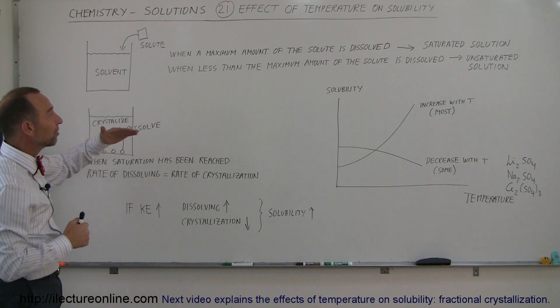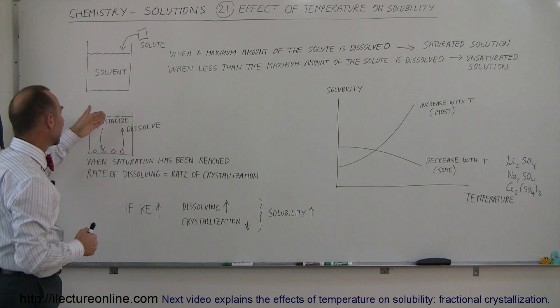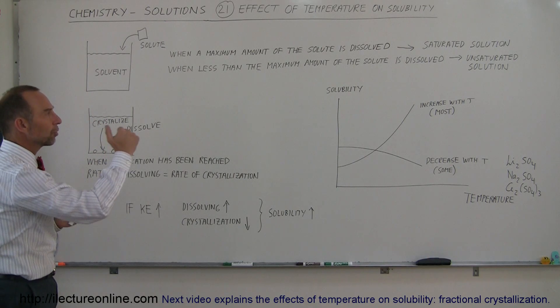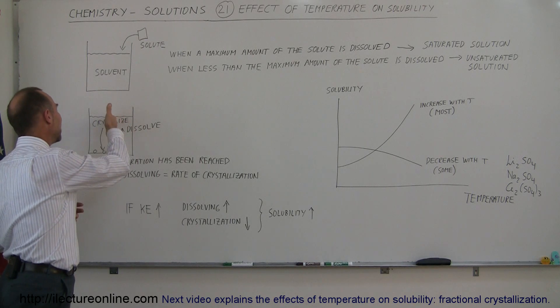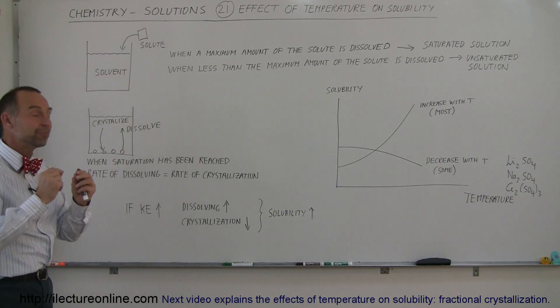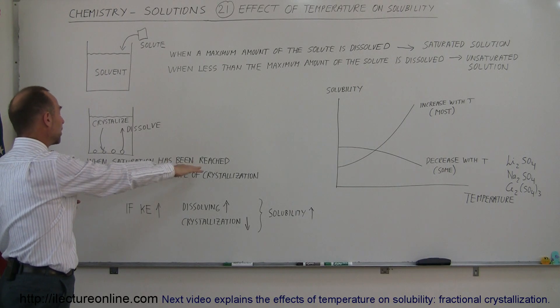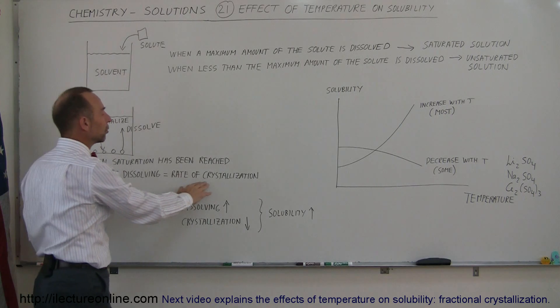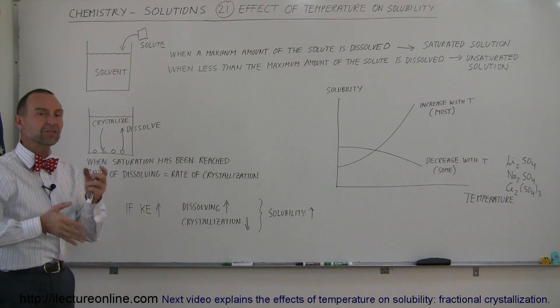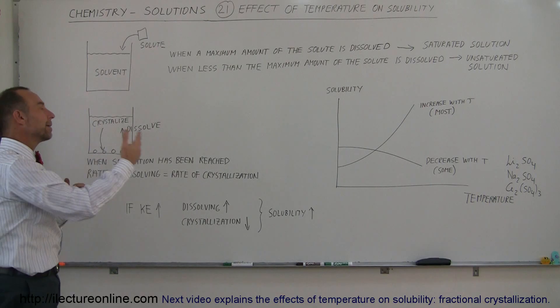Initially, when it's not yet saturated, you'll have a greater number of ions being dissolved and fewer being crystallized. But as you get closer to the saturation point, less will dissolve and more will crystallize until the rate of both become equal. When saturation has been reached, the rate of dissolving is now equal to the rate of crystallization. This is still an ongoing process, but you're not going to end up with more ions in solution.